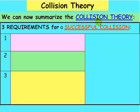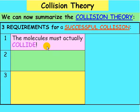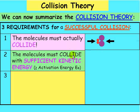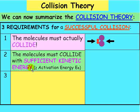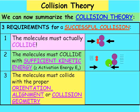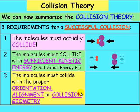So we can now summarize collision theory, the three requirements for a successful collision. The first one is the molecules must actually collide. They can't miss. The second one is they must collide with sufficient kinetic energy, greater than or equal to the activation energy. And the third requirement, they must collide with the proper orientation, alignment, or collision geometry.